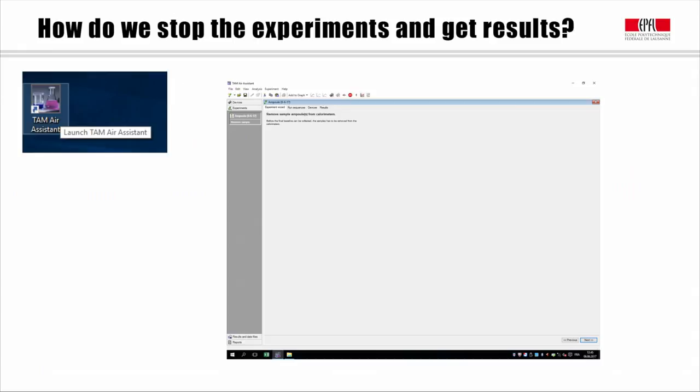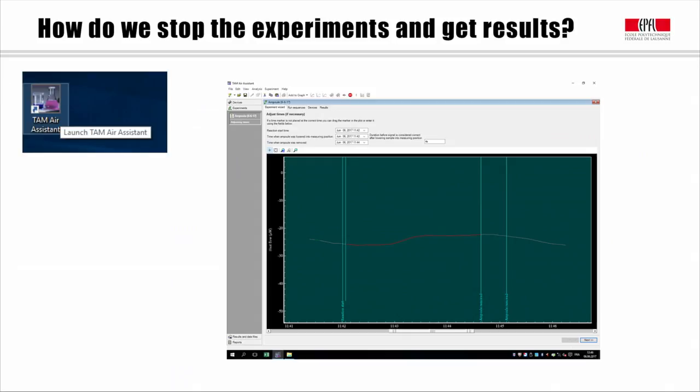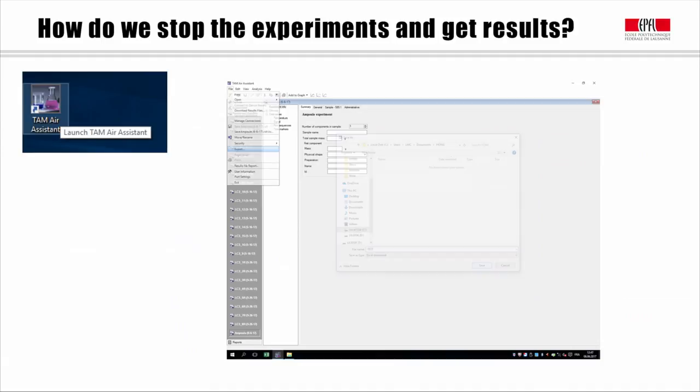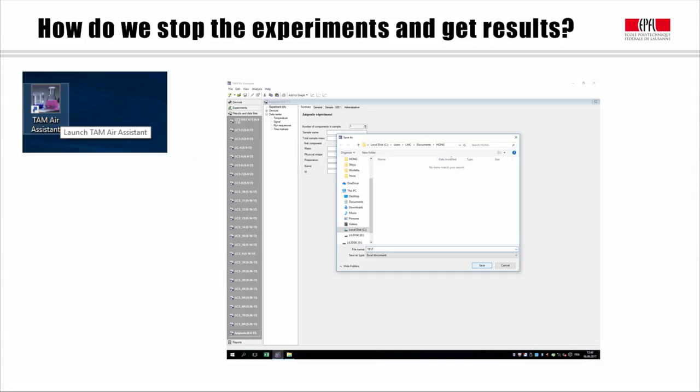To export the data, you need to select which experiment you want to have the data and click Export in the File menu. After selecting the information which you want to have, you can export the data as CSV file or Excel file. In this file, you can have the time for the experiment, heat flow and cumulative heat release. Cumulative heat release is obtained by calculating the integration of the heat flow. Don't forget to add the time during the sample preparation.